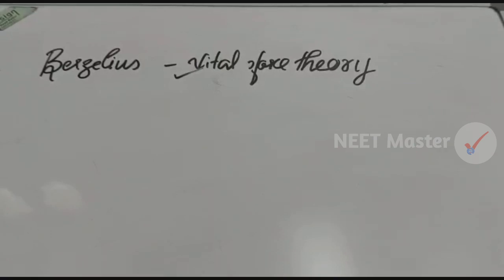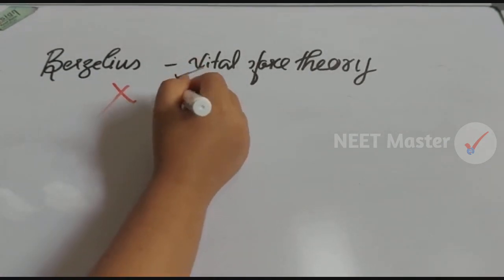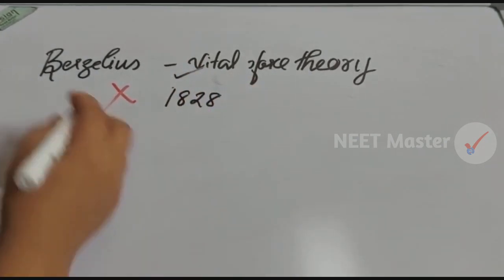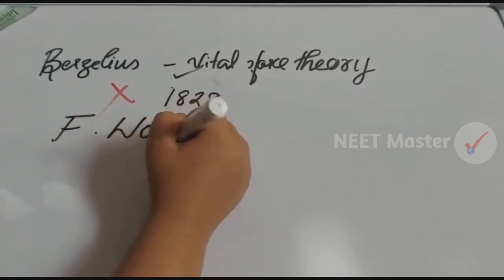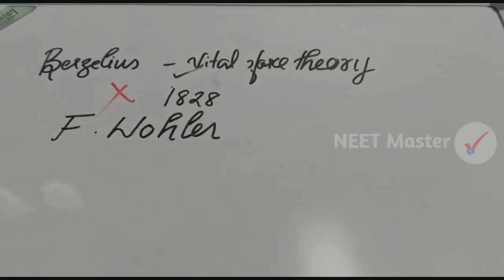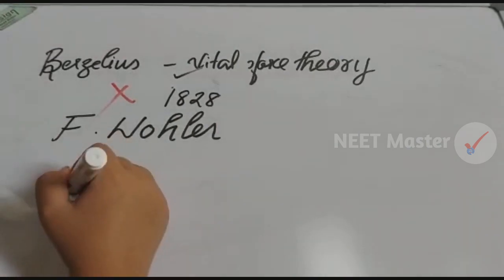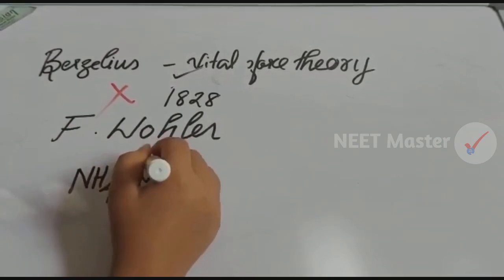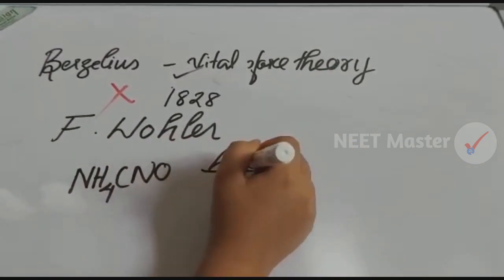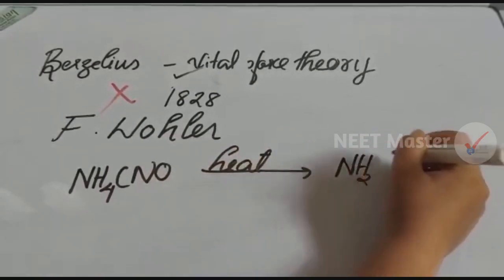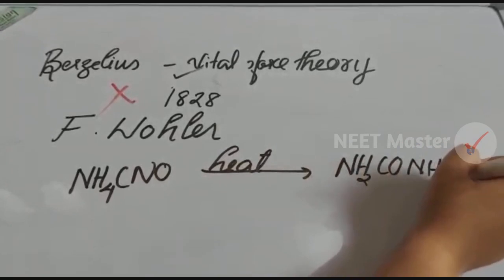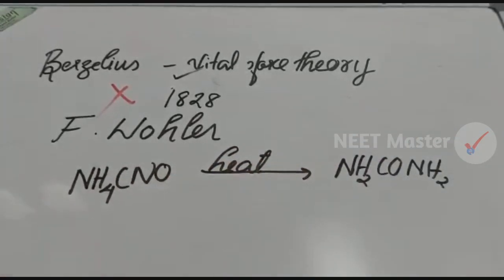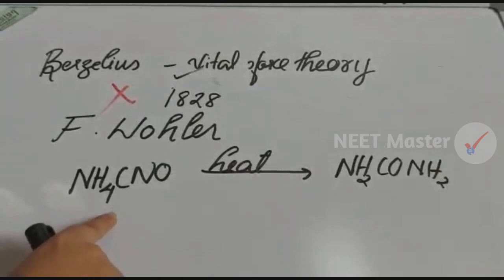However, this theory was disproved. A scientist named Friedrich Wöhler disproved it in 1828. He showed that when ammonium cyanate is heated, it converts to urea. Since urea is an organic compound that was synthesized from an inorganic starting material, this challenged the vital force theory.